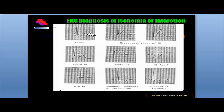The acute changes related to myocardial ischemia or infarction are focused on the ST segment and the T wave. The earliest changes, that is within minutes of occlusion of a coronary artery, would be straightening of the ST segment, blending with the upstroke of the T wave, along with the T wave being lifted from the baseline.